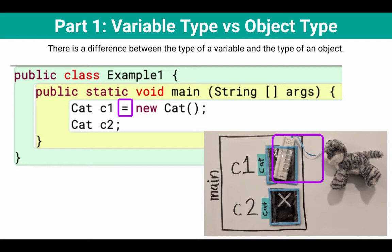Let's compare that to the second line, cat c2. So cat c2, that makes a variable with name c2. It's also of type cat, but we haven't given it a value. So there's no additional steps to do.